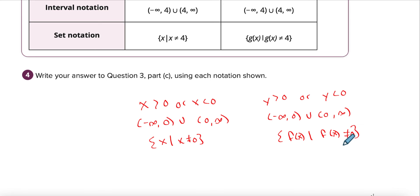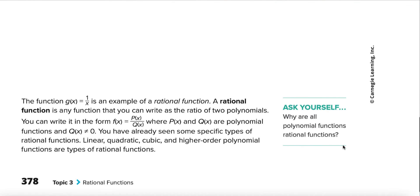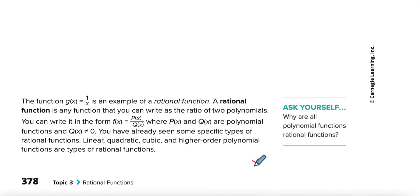A rational function is any function you can write as a ratio — ratio is just a fancy word for fraction. So we have a polynomial on top and a polynomial on the bottom. Remember polynomials have x's with numerical powers, or they are just numbers like one or two.